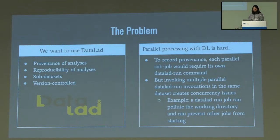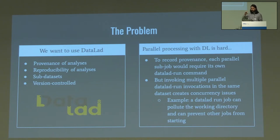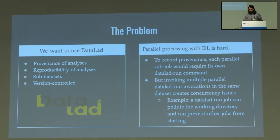The problem was that we want to use Datalad — it's great for recording provenance, reproducibility, etc. But parallel processing with Datalad is hard. This was back in 2020 when we were coming up with this workflow. Basically you need a Datalad run command for each subjob you want to run in parallel if you want to record the provenance of each subjob. But having those run simultaneously creates concurrency issues — one Datalad run job might pollute the working directory and prevent other jobs from starting.